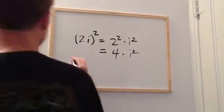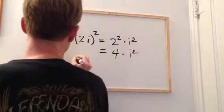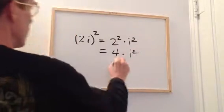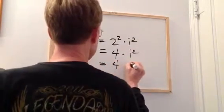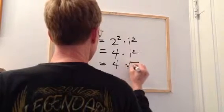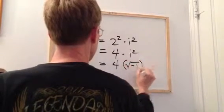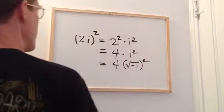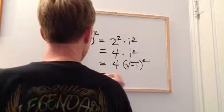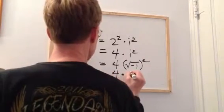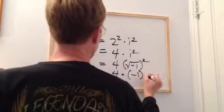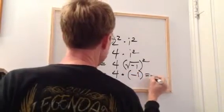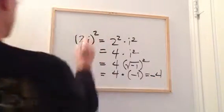which equals four times i squared. But what is i but the square root, or the positive square root, actually, of minus one. So, what we're going to get here is four times the square root of minus one squared, which equals four times minus one, which equals minus four.